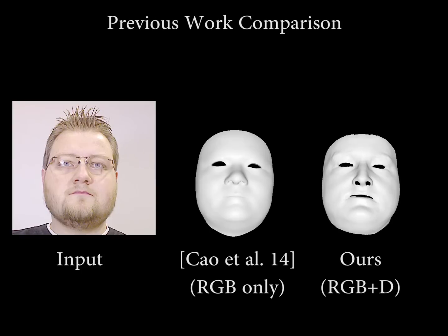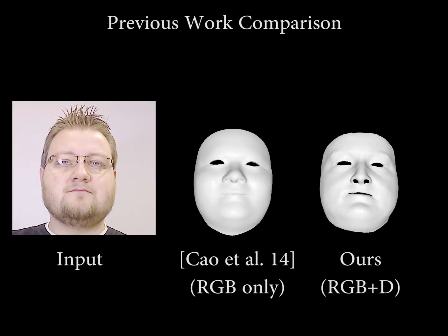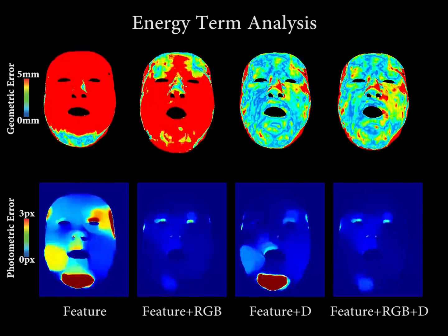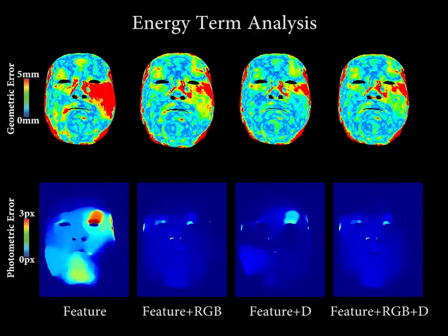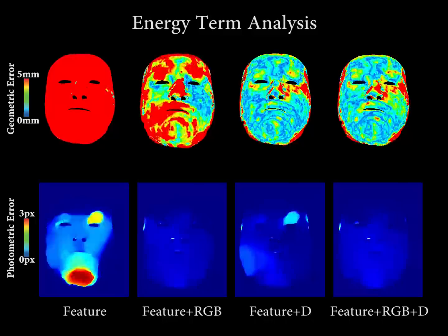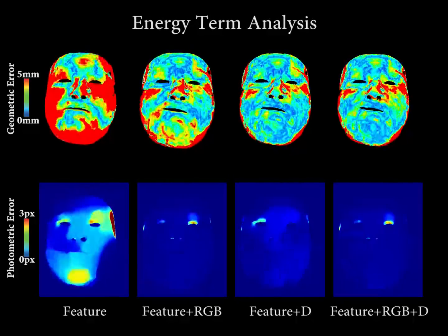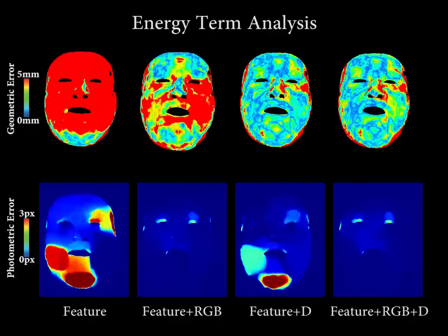Tracking is only slightly disturbed with glasses and quickly recovers. Here we analyze the influence of terms in our objective function. Note that the combination of dense RGB and depth data provides for small geometric and photometric error.